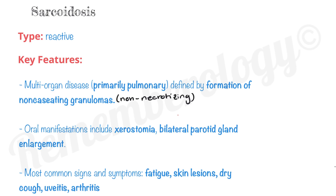Oral manifestations include xerostomia as well as bilateral parotid gland enlargement. The most common signs and symptoms of sarcoidosis are fatigue, skin lesions, dry cough, uveitis, and arthritis. Uveitis is inflammation of the uvea, or the middle layer of the eye.